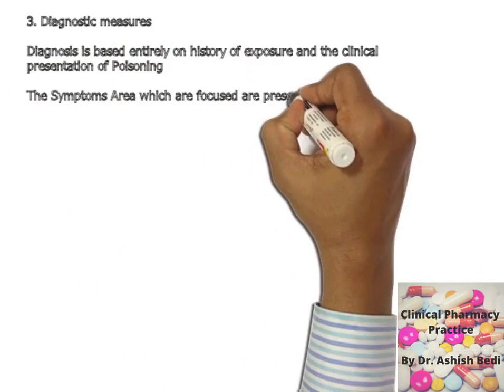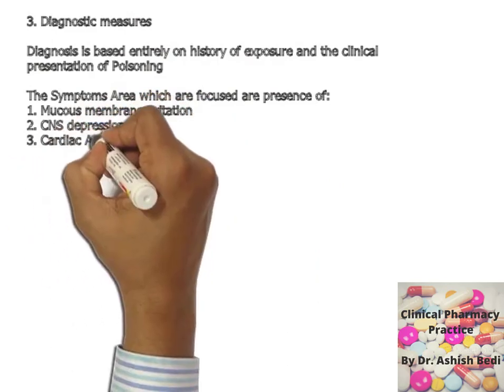The diagnosis is based entirely on history of exposure and clinical presentation. When a caustic poisoning patient approaches the physician, the focus will be on history and clinical presentation, because we don't have a specific antidote for most caustic poisonings — only one or two specific antidotes exist for certain acids. Therefore, treatment is entirely dependent on supportive and symptomatic management.